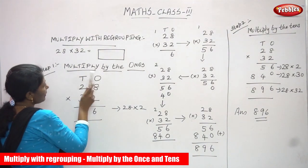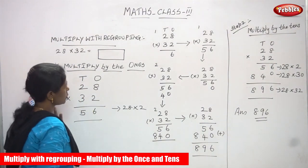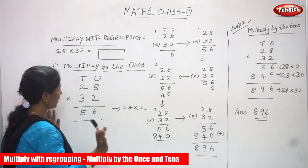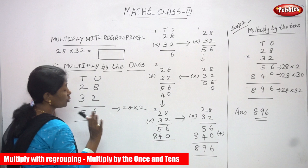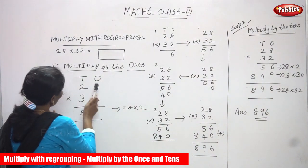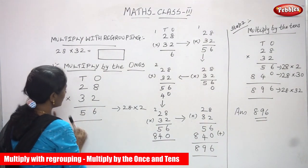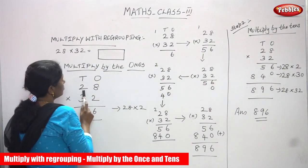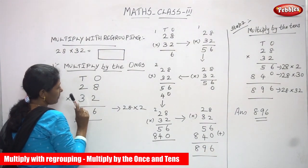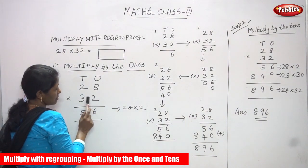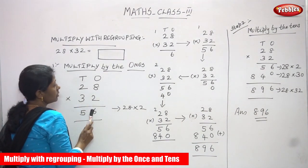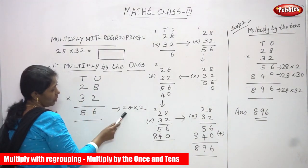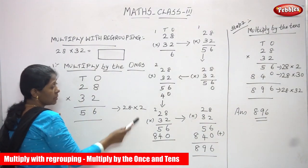Step one: multiply by the ones. First, ones and tens — that is place value. You have to write according to the place value: write the number 28 and 32. So 28 is going to multiply by 32; in the ones place the number is 2. So we are going to multiply 28 into 2 ones.